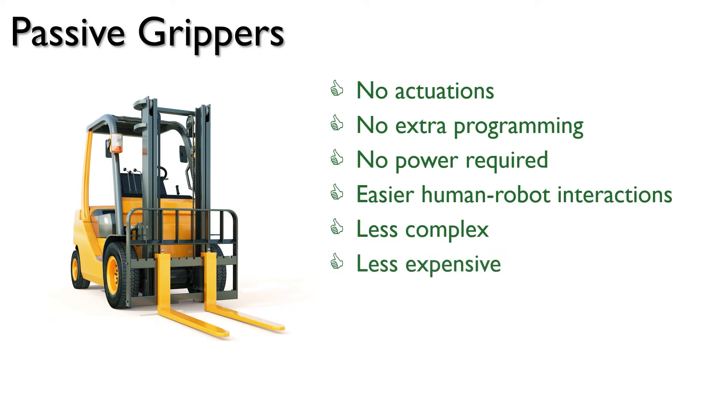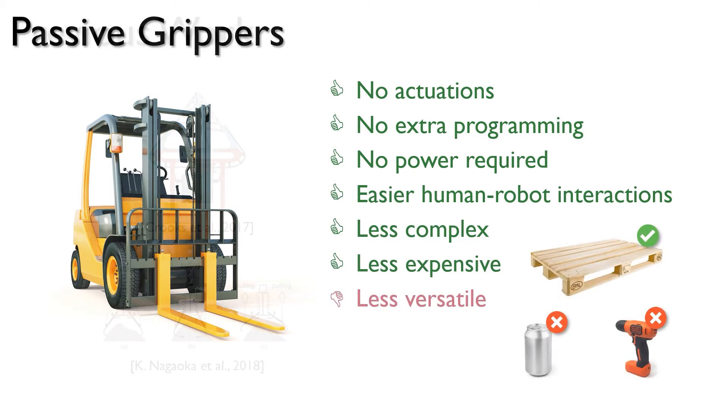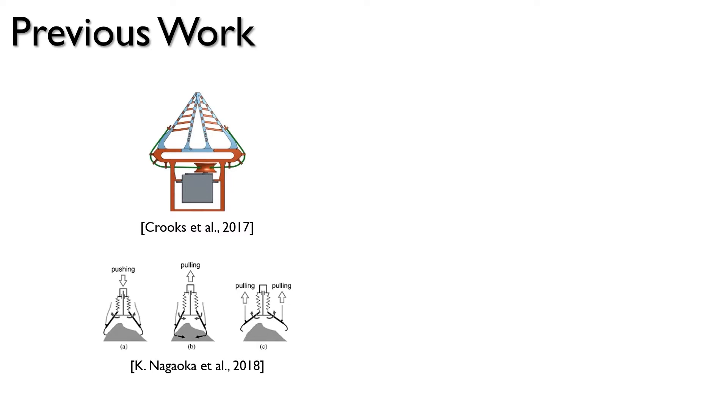However, one limitation to the widespread use of passive grippers is the significantly restricted types of objects that can be grabbed. Some grippers are called passive because they passively conform to an object. They rely on soft or elastic structures to squeeze an object. This type of gripper still requires an actuator to release a grasp.